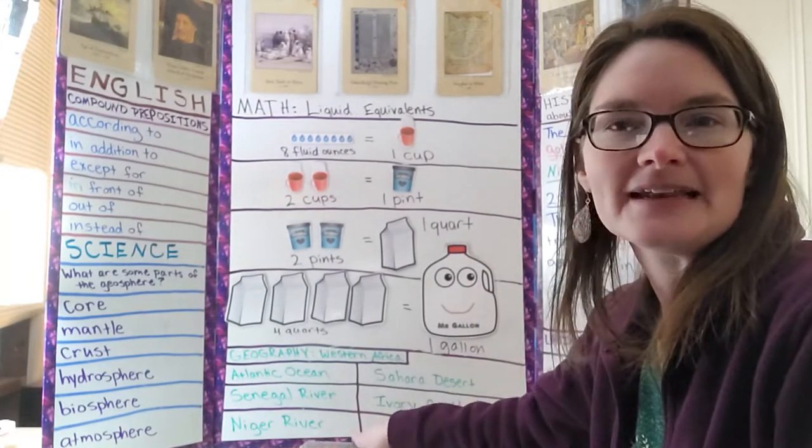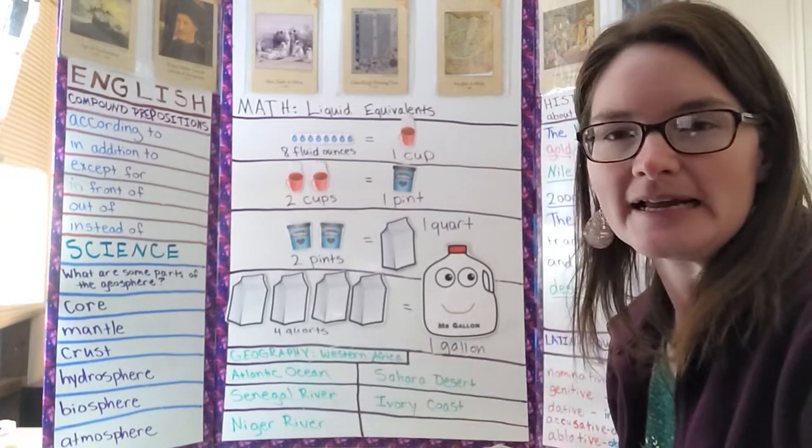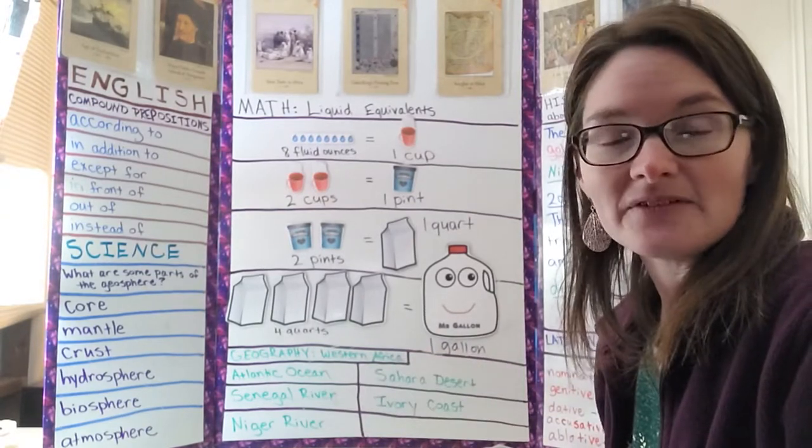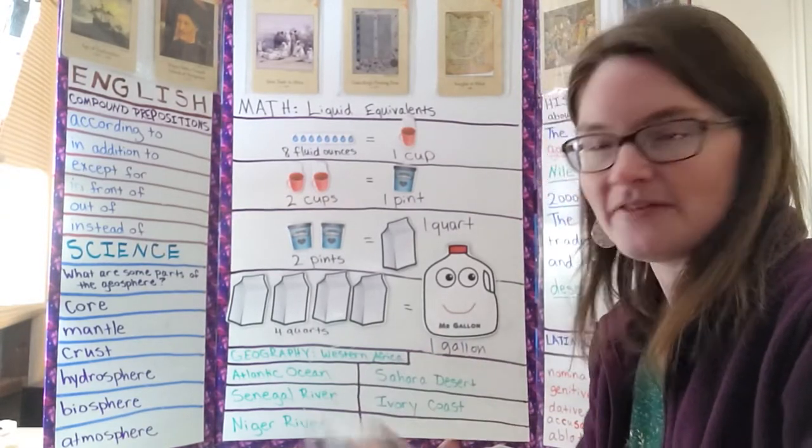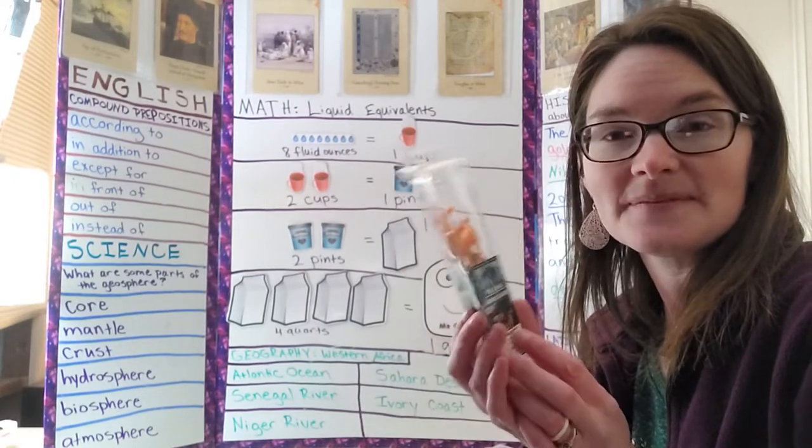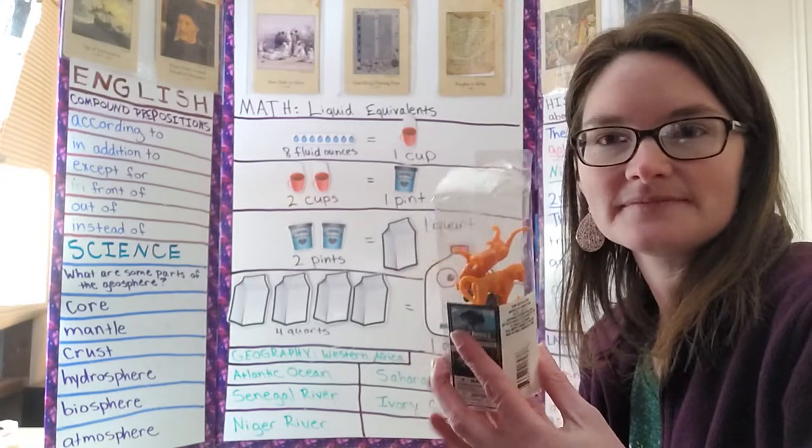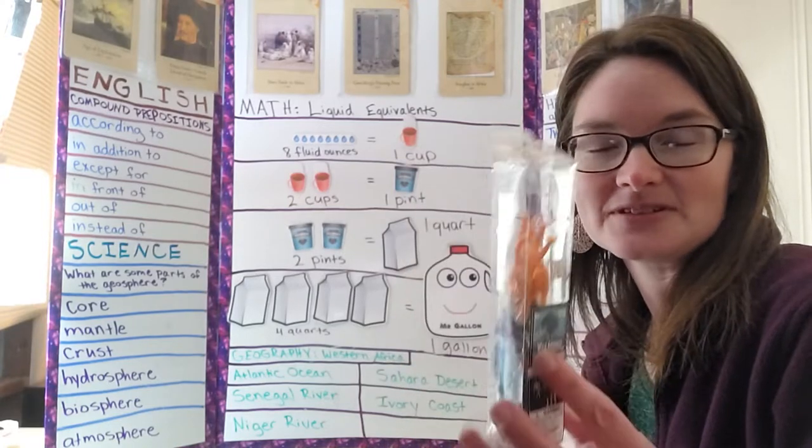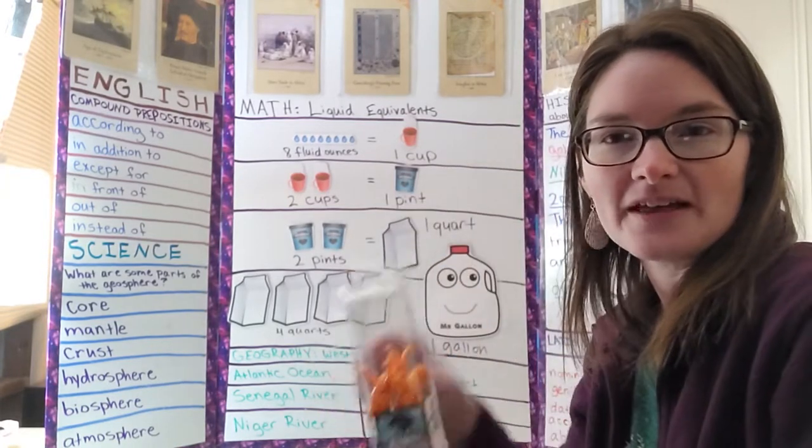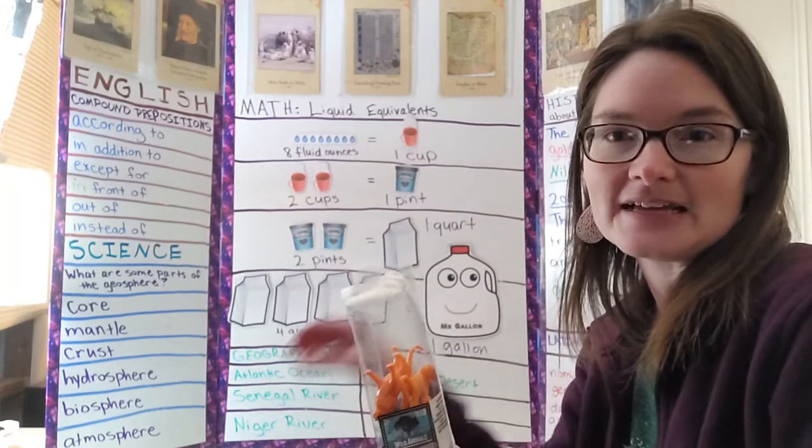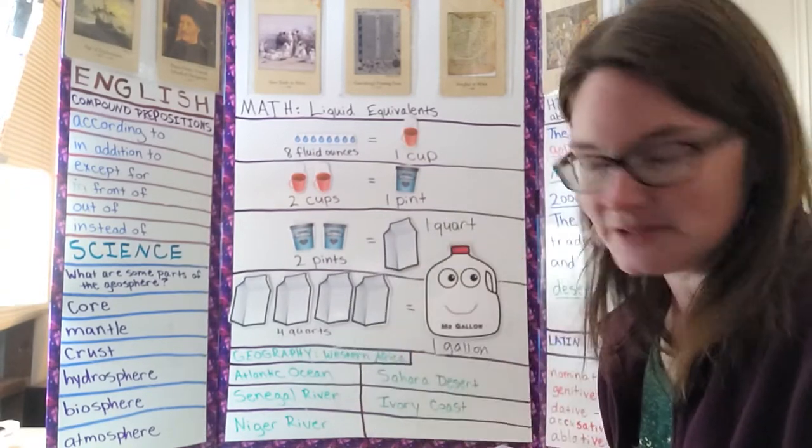Since we're doing Western Africa today, I found these wild animals at the Dollar Tree, so they each got an animal. Most of them are African animals, so we each got an animal and they hopped from place to place as we recited the geography memory work.